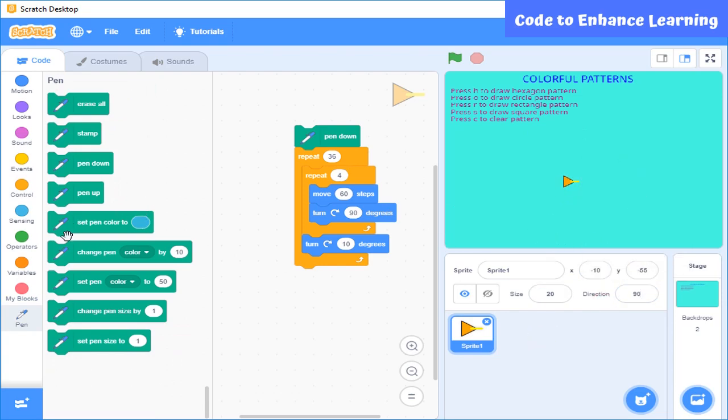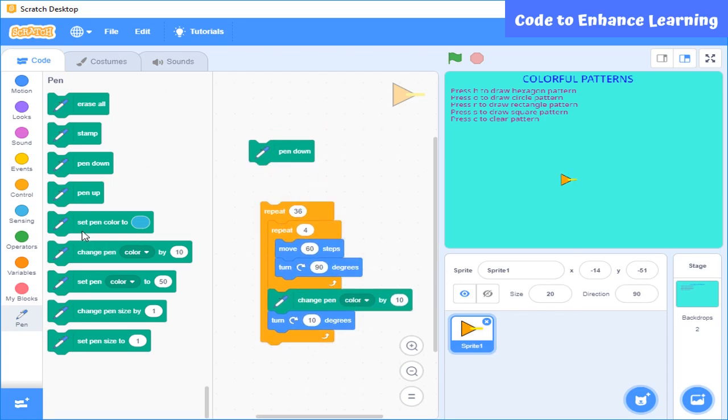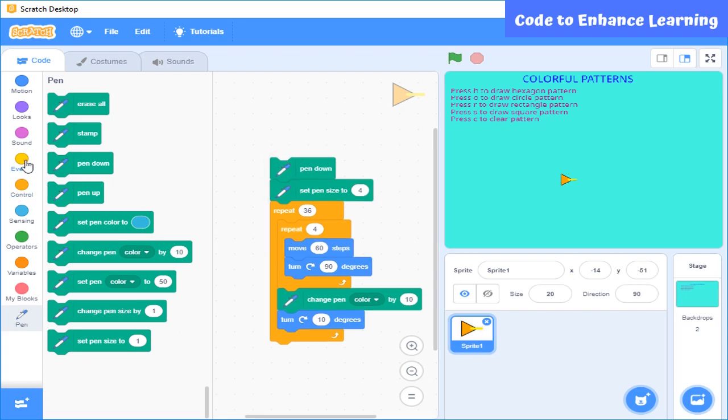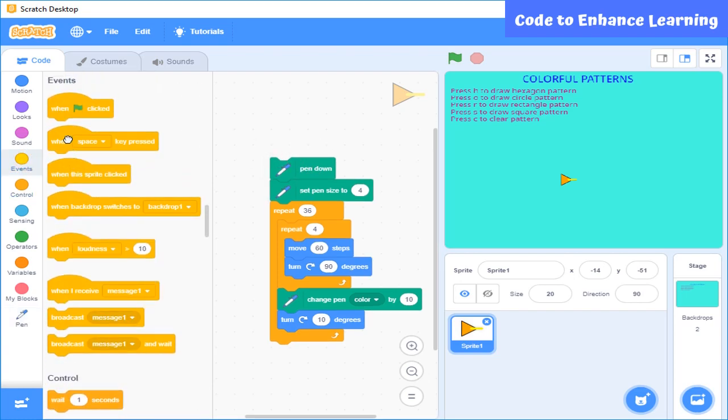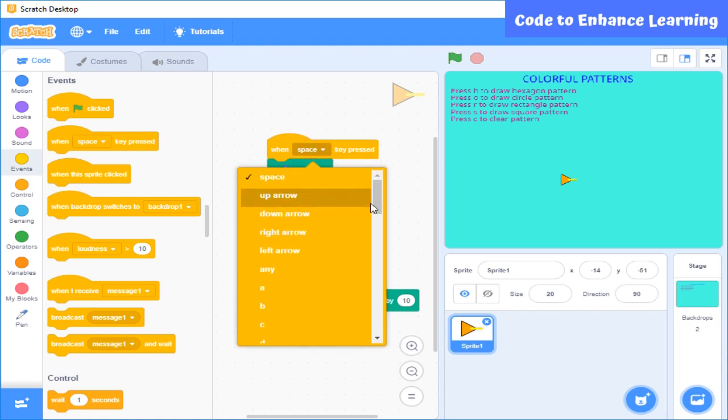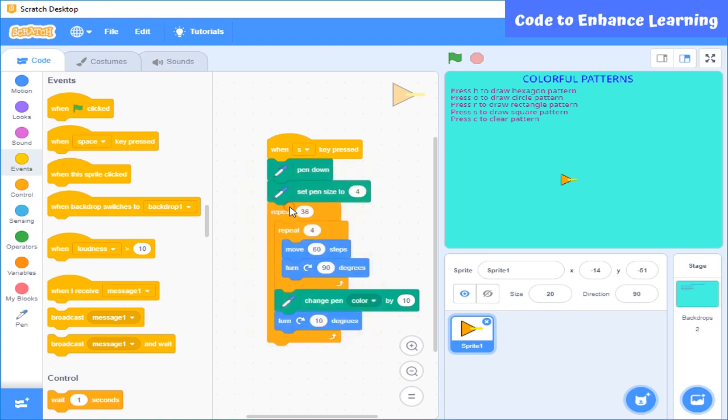Now I am going to select this pen change so that every square is of different color to make colorful pattern. Now this block is used to set size of a pen. After this, we will select this block as you can see in backdrop we have mentioned that press S to form a square pattern. So we will select S here. Let's press S to see how this code works.